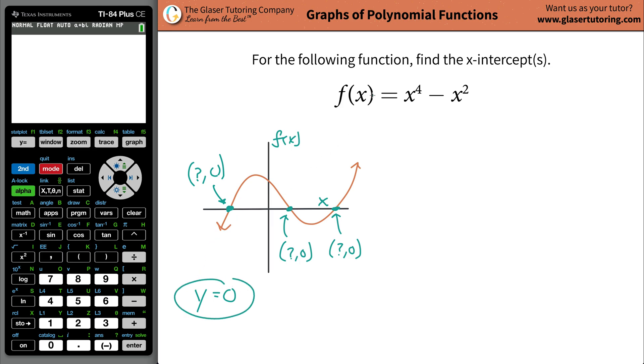An x-intercept is the x-value where the function's y-value or the function's value equals zero. So let's just think about that logically for a minute. Go back to your function now. So here's your function. I'm just going to write y for now, x to the fourth minus x squared.